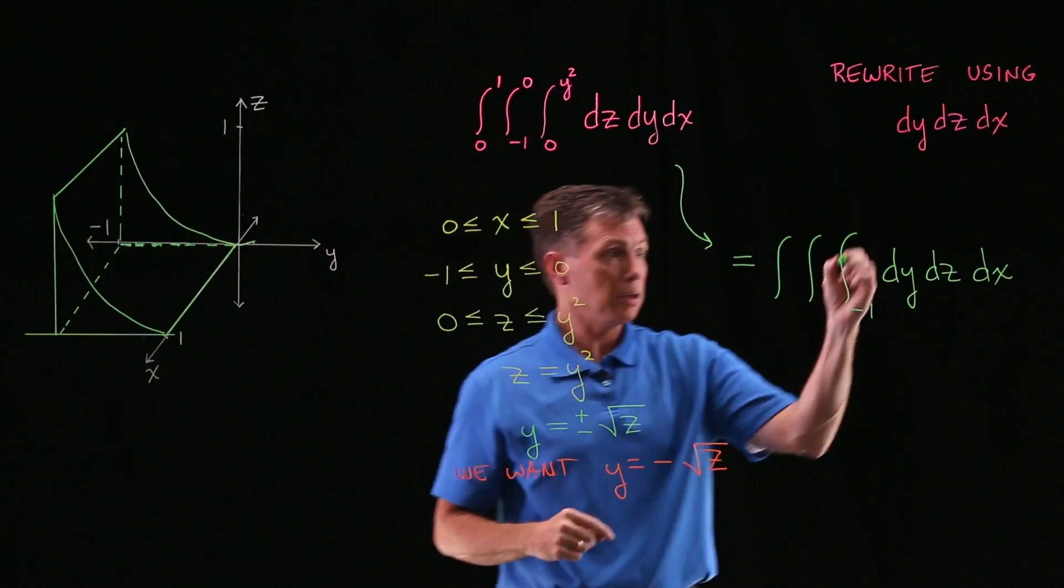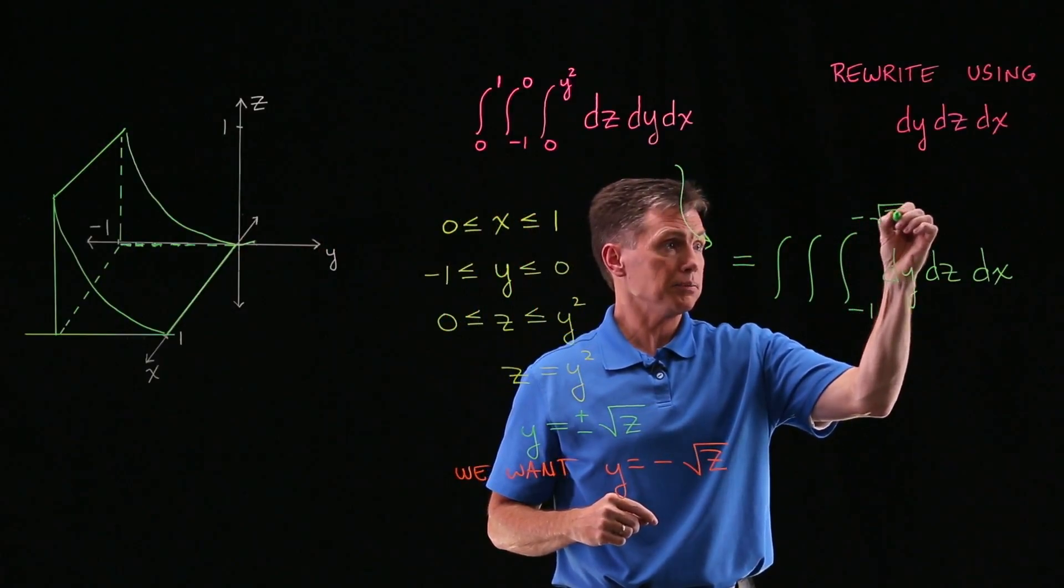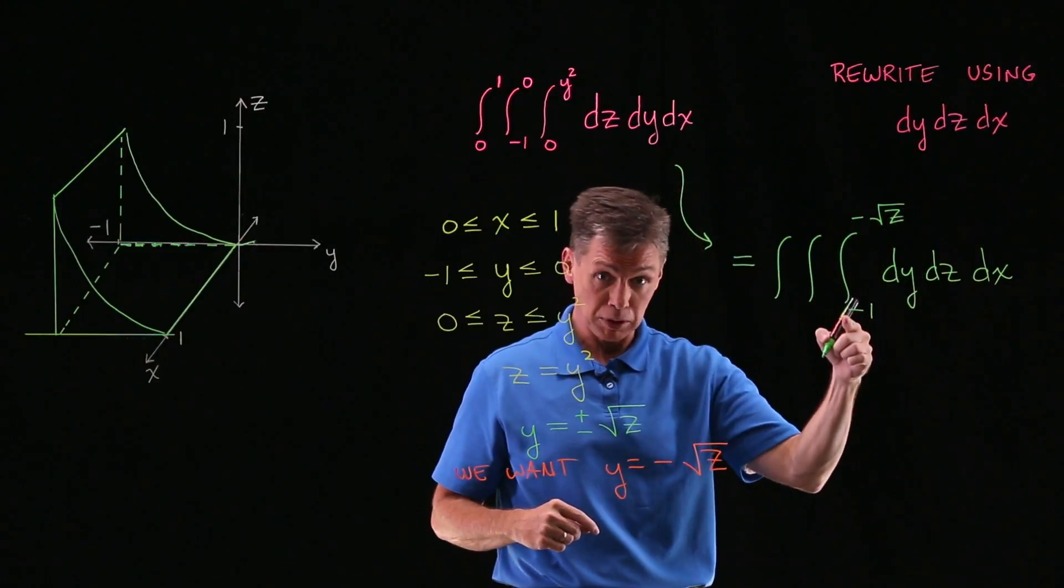So y is equal to the negative square root of z. Let me come back over here. That is my upper limit of integration for the innermost integral.